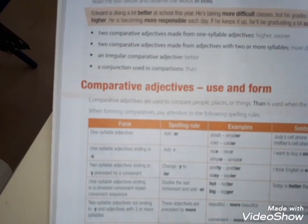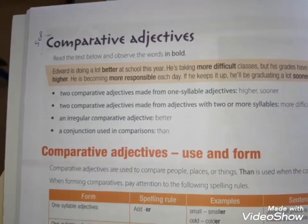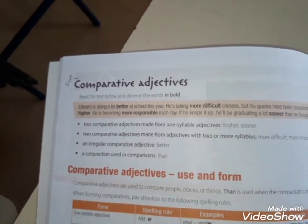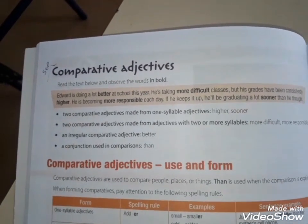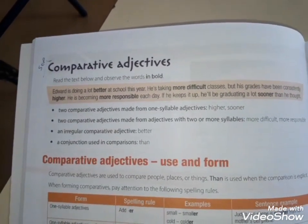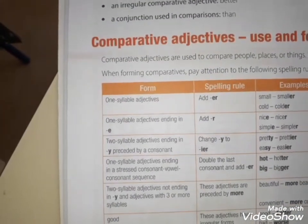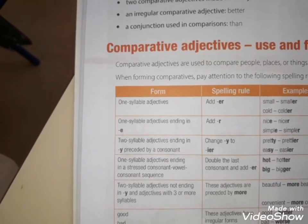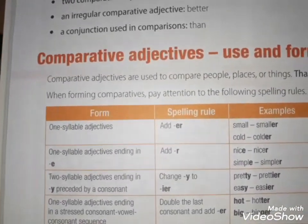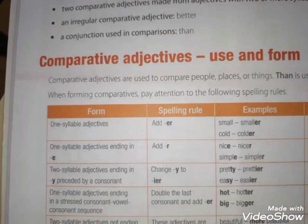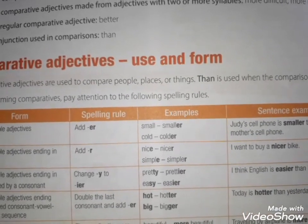O uso e a estrutura dos adjetivos comparativos. Pessoal, a gente vai trabalhar com dois tipos de adjetivos: curtos e longos. Adjetivos curtos têm uma sílaba ou duas no máximo. Qual é a regra geral? Acrescentar ER no final de cada adjetivo. Small, pequeno → smaller, menor. Cold, frio → colder, mais frio que.